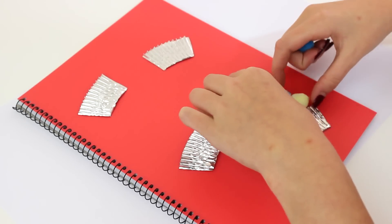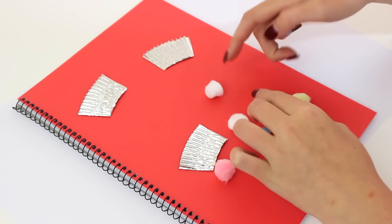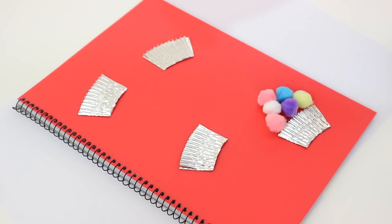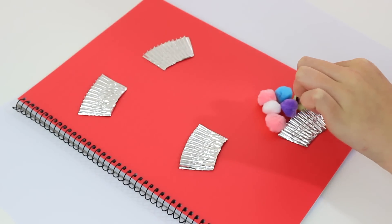Then begin to lay down your pom-poms. I did three at the bottom, two at the middle, and one at the top. And I did each patty pan slash cupcake with a different colored top, so this one I did pink.